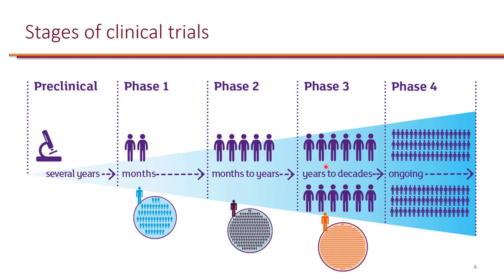Once the dose has been determined from a phase two study, and once it's determined that it's safe and effective, they will enroll a larger study from patients who actually have the disease and study the drug to make sure that it's safe and effective. Once the drug is approved after completion of phase three studies, there will be post-marketing studies at phase four.